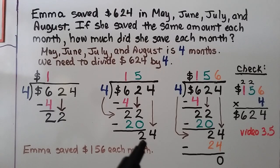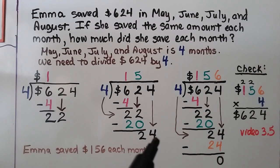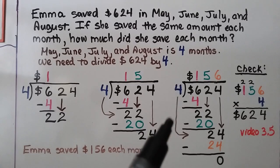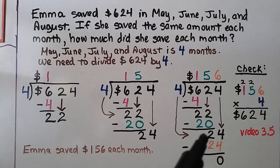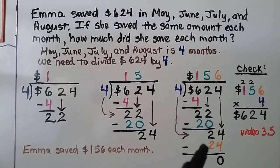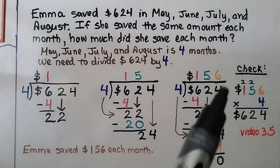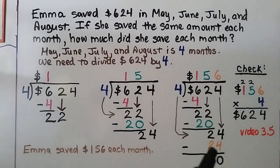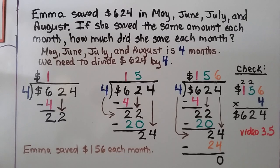We do our subtraction and get a 2. It's the 4's turn to come down. Now we ask how many times can 4 fit into 24 — 6 times, because 4 times 6 is equal to 24. We write the 6 up there and the 24 here. We do our subtraction and get a 0. So our quotient is $156.